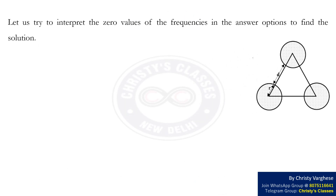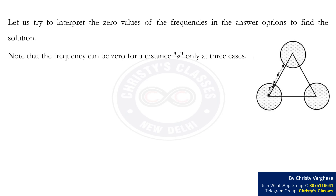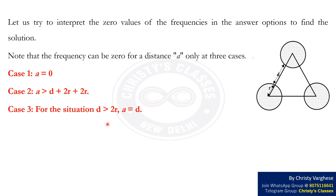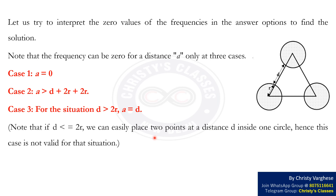Let us try to interpret the zero values of the frequencies in the answer options to find the solution. The frequency can be zero for a distance A only in three cases. Case 1: when A equals 0. Case 2: when A is greater than D plus 2R plus 2R. Case 3: for a situation where D is greater than 2R and A equals D. Note that if D is less than or equal to 2R, we can easily place two points at a distance D inside one circle, hence this case is not valid for that situation.